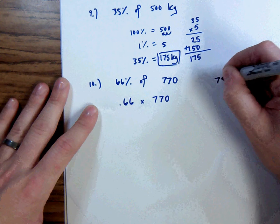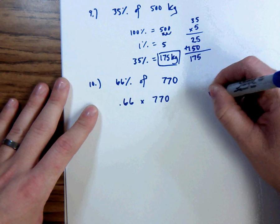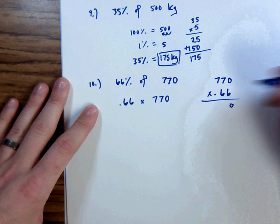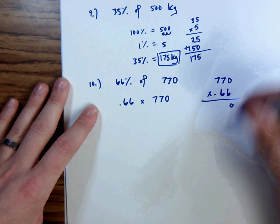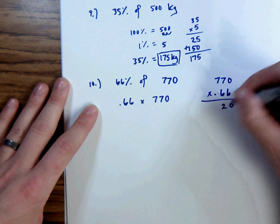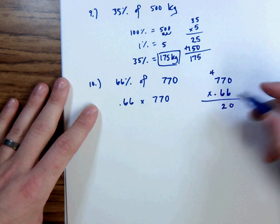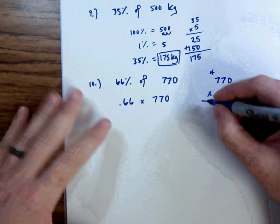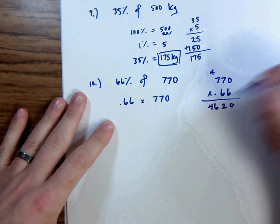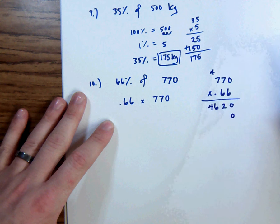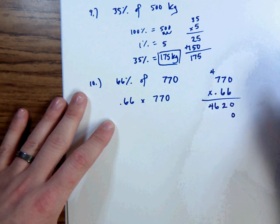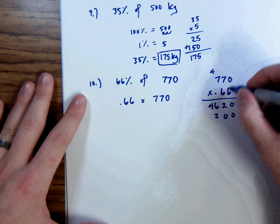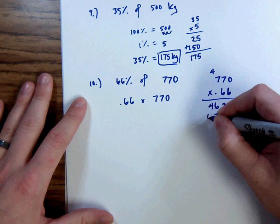6 times 0 is 0. 6 times 7 is 42. I had a problem the other day with that one. 42, carry the 4. 6 times 7 is 42, but this time we add 4. So 42 plus 4 is 46. Do that again, but we have to carry our 0. And because this is 6, actually all the numbers are going to be the exact same. 6 times 0 is 6. 6 times 7 is 42. Carry the 4. 6 times 7 is 42 again, plus 4 is 46.